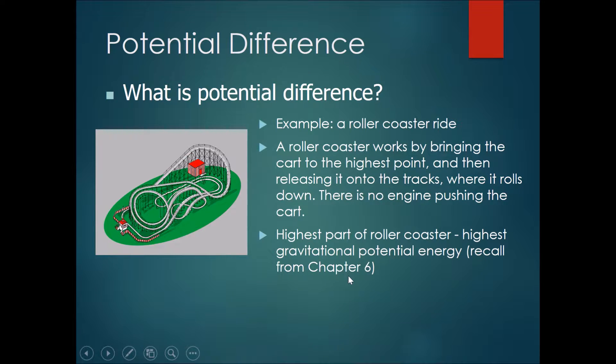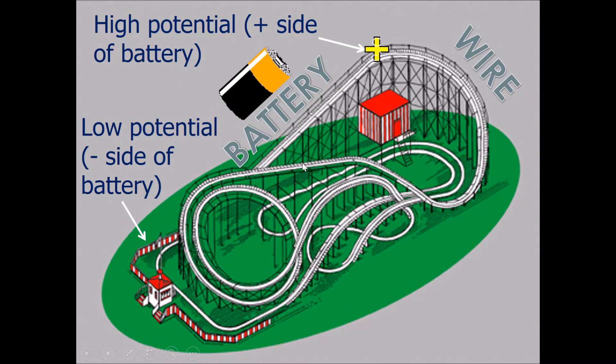So from what we learned in chapter 6, the highest part of the roller coaster, which would be here, would have the highest gravitational potential energy. And after it completes all its turns and swings and it comes down to here, the lowest part of the roller coaster would have the lowest gravitational potential energy.